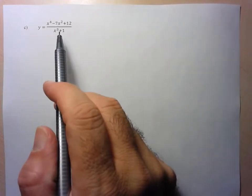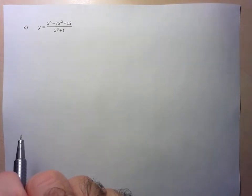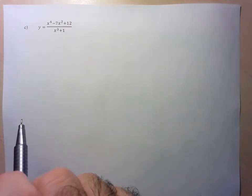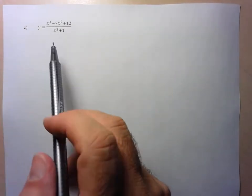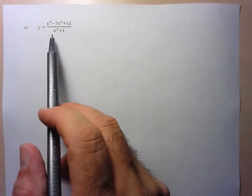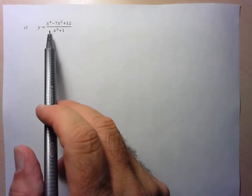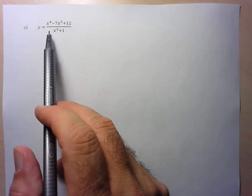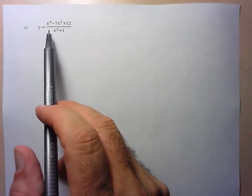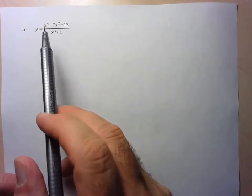Hi folks, we're going to take a look at the graph of this function given here. So first thing I notice is that I've got a higher degree in the numerator than in the denominator — in fact exactly one more. So I know it's going to go to positive and negative infinity along a linear oblique asymptote. So let's keep that in mind as we're doing it.